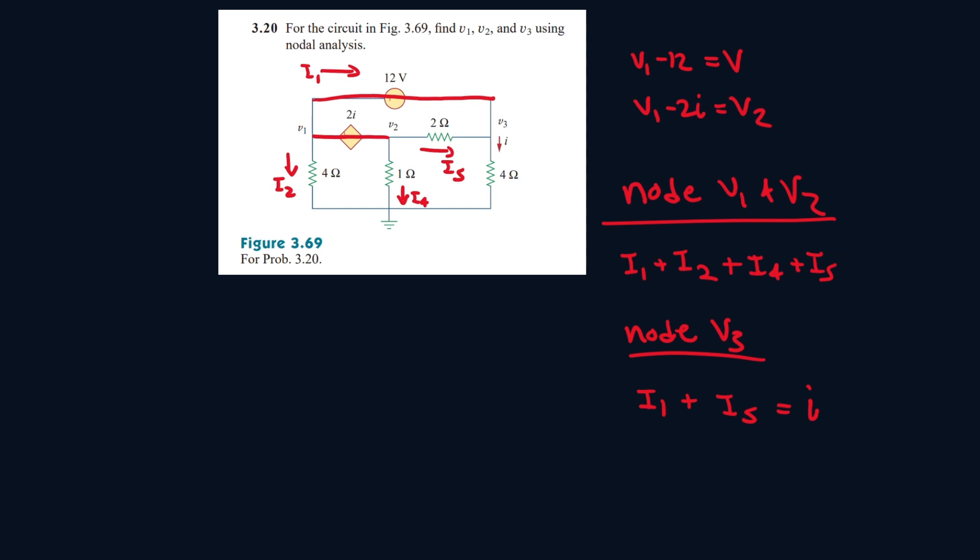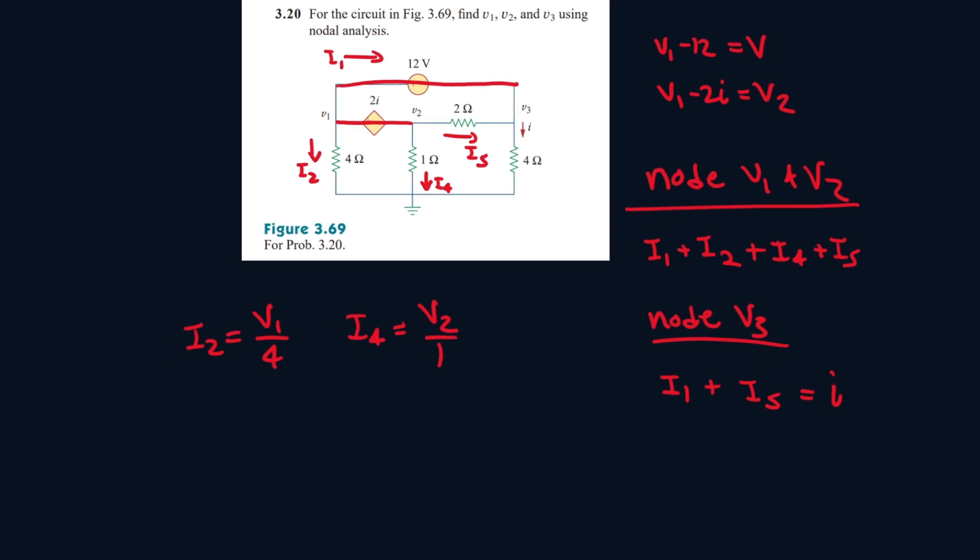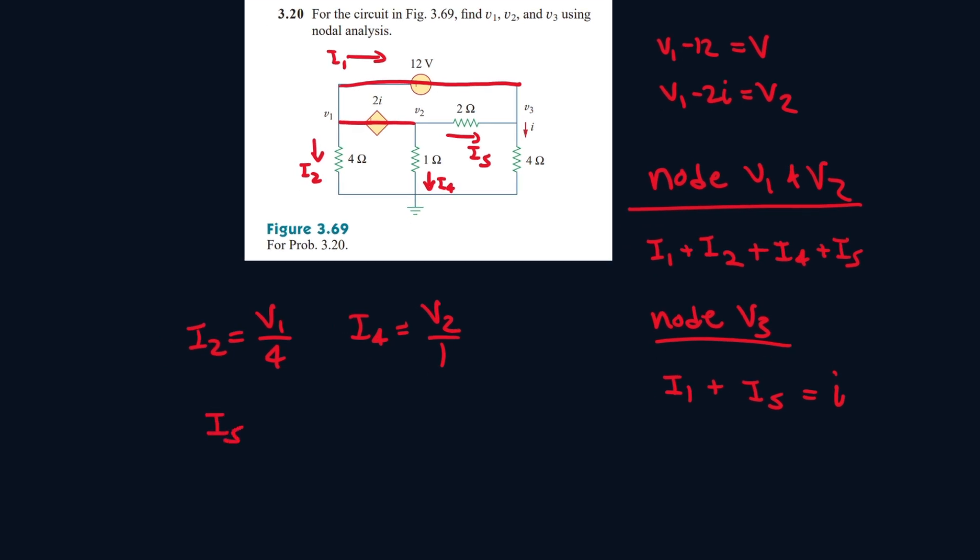So let's find equations to represent these i values. So i1, we can't find i1 because like I said there's no resistors to help us find it. Let's find i2, i2 is v1 over 4. i3, obviously we're not focusing on i3. i4 will be v2 all over 1. i5 will be v2 minus v3 all over 2, and i will be v3 over 4.